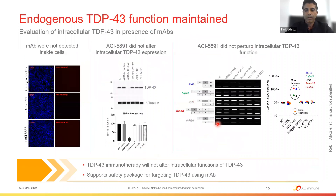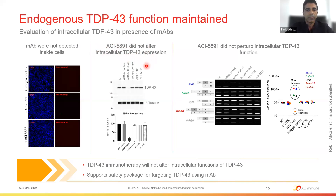We also addressed the safety of this immunotherapy approach. In a simple in vitro experiment using cell lines, antibody treatment did not alter intracellular TDP-43 expression compared to a positive control siRNA, and—importantly—did not alter any splicing functions, which is an essential function of TDP-43 for downstream target genes. This data supports the safety of targeting TDP-43 with a monoclonal antibody, as it does not perturb essential physiological functions of the protein.